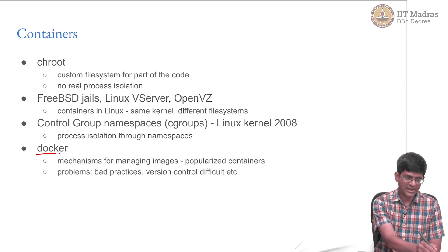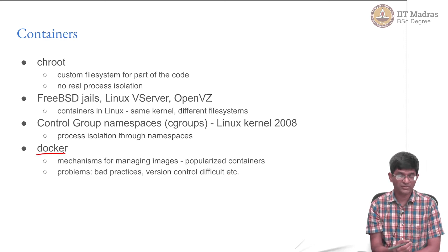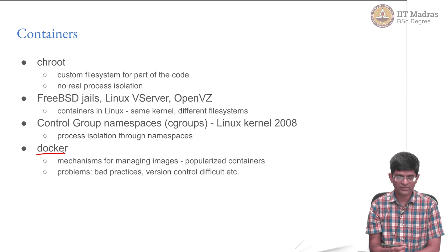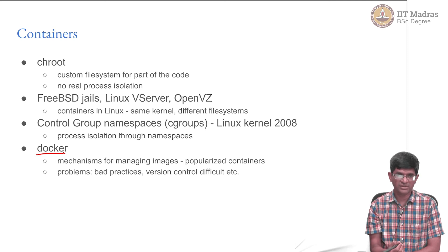In particular, the popularity started with the introduction of Docker, which is one particular software for managing containers. Docker by itself is not a container — container does not automatically imply Docker; Docker is one way of managing containers. It has lots of mechanisms for managing images and really played a great role in popularizing the use of containers. There are some criticisms — it is easy to fall into certain bad practices. There are well-defined best practices for using Docker, but they are not always followed, which means you can end up with a messy process in certain kinds of images.